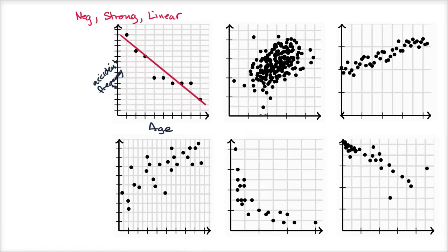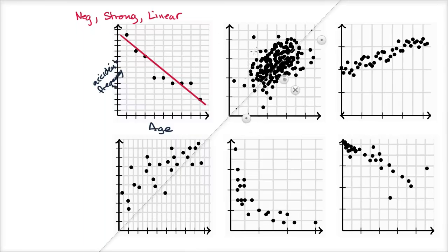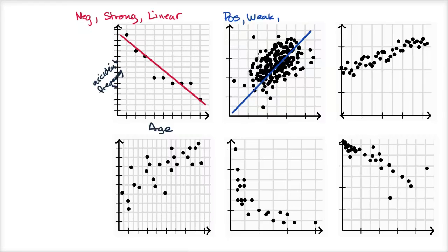Now let's look at this one — pause and think about what it would be. I'll get my ruler tool out again. It looks like generally speaking, as one variable increases, the other variable increases as well. Something like this line goes through the data and approximates the direction. This looks positive — as one variable increases, the other increases roughly. So this is a positive relationship, but it's weak: a lot of the data is well off the line. But I'd still call this linear, since as we increase one, the other increases at roughly the same rate, even though the data points are all over the place.